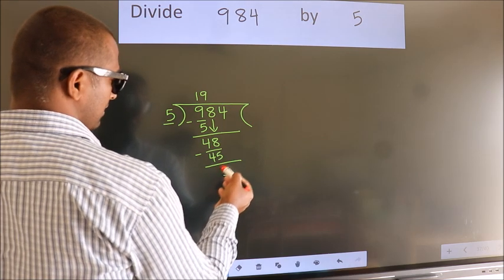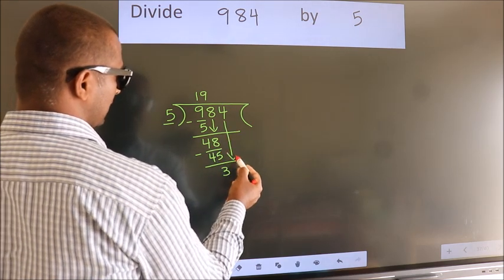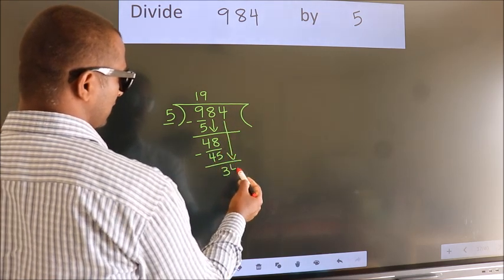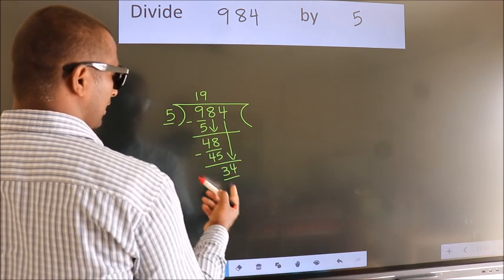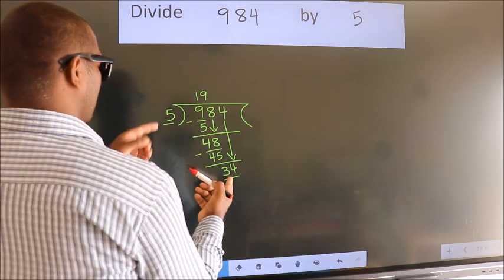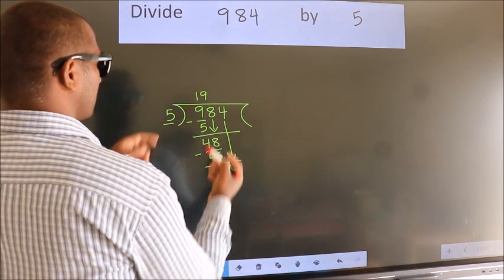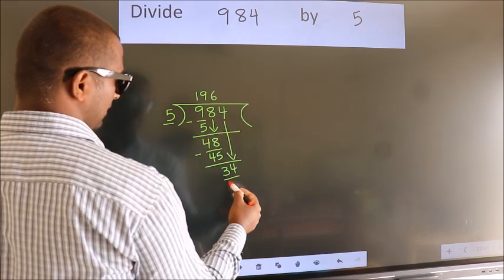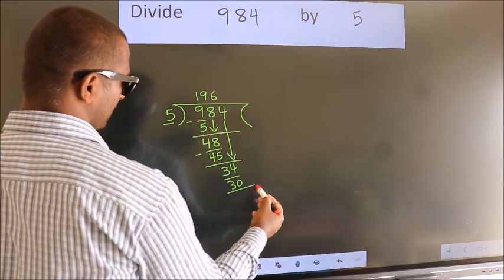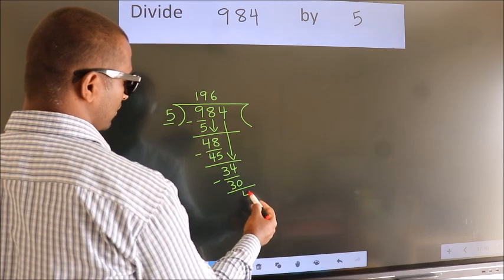After this, bring down the beside number. So, 4 down. So, 34. A number close to 34 in the 5 table is 5, 6, 30. Now we subtract. We get 4.